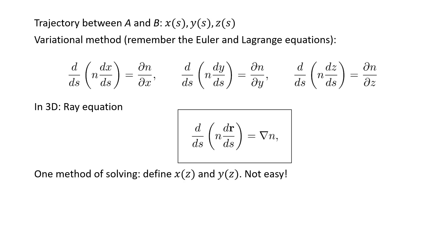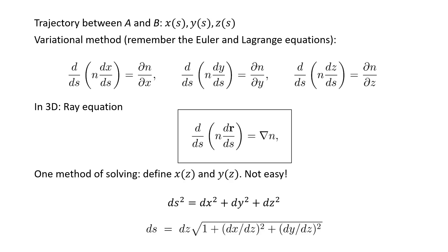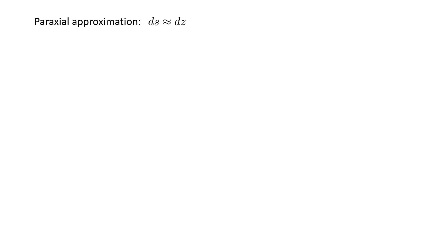One method of solving is to define x and y as functions of z. We can start with: ds² = dx² + dy² + dz². If we factor dz from the right side and take the square root, we obtain: ds = dz times the square root of 1 plus (dx/dz)² plus (dy/dz)². If we only consider paraxial rays, the second and third terms inside the radical are negligible, so we can simply write ds ≈ dz.